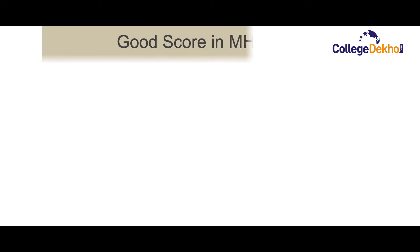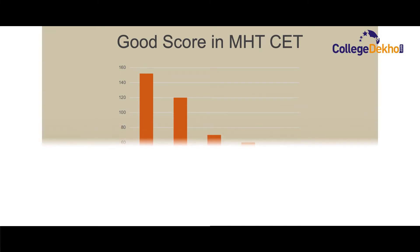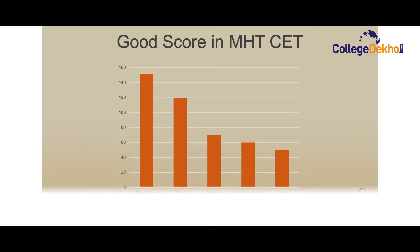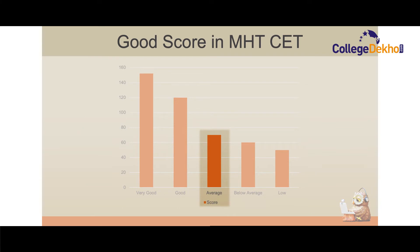Now, let us look at what is a good score in MHT CET. The exam is conducted for a total of 200 marks. Based on previous year trends and percentile analysis, a very good score in MHT CET is above 150. A score of 120 or above can be considered a good score. An average score can be considered 70 or above. If you have scored below 60, it is considered a below average score, and a score below 50 can be considered a low score in MHT CET.